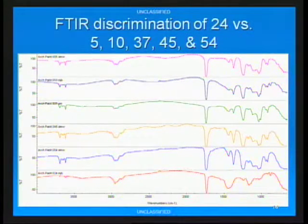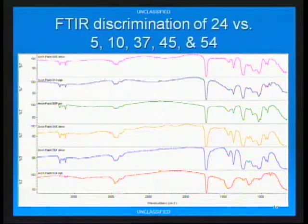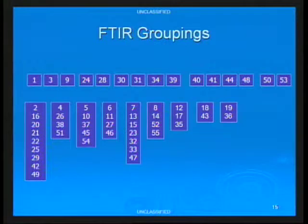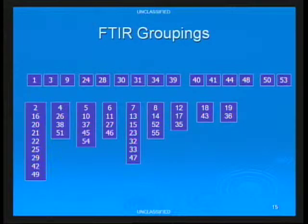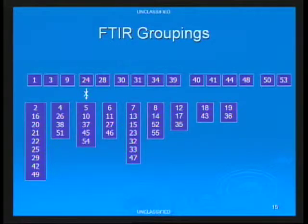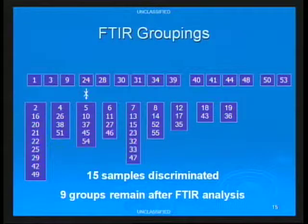Here I'm showing five different samples considered consistent in terms of FTIR, but the sample at the bottom in red we felt could be discriminated from the rest of the set. So at the end of FTIR, these are the groupings we were left with — every sample across the top in its own box is discriminated from all others in the study, and the second row shows samples considered part of the same group. After FTIR, we had 15 samples discriminated from the rest and nine groups remaining.